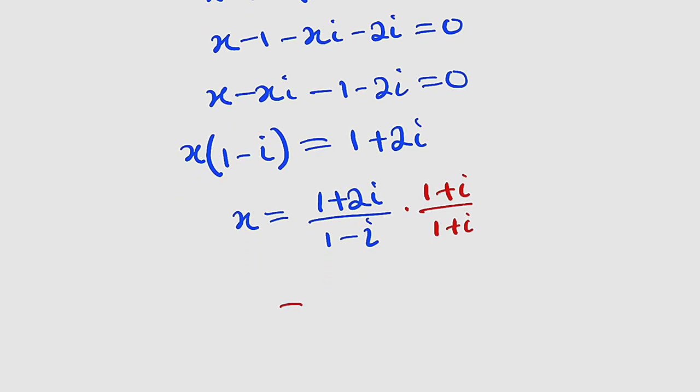So x will be equal to 1 plus 2i, divided by 1 minus i. To rationalize the bottom, you can multiply the top by 1 plus i, the bottom by 1 plus i. The conjugate of the bottom. So to the top, we have 1 times 1 is 1, then 1 times i is i. Then you take the second term here. 2i times 1 is 2i. Then 2i times i will give us 2i squared, which is negative 2. Divide by. The bottom is difference of two squares, that is 1 squared minus i squared.